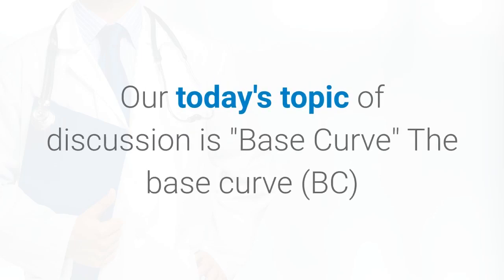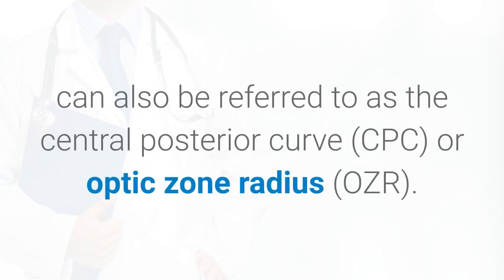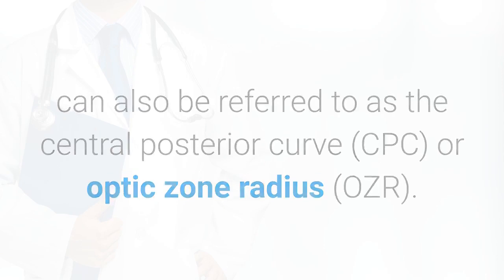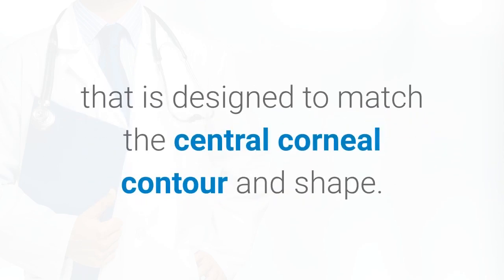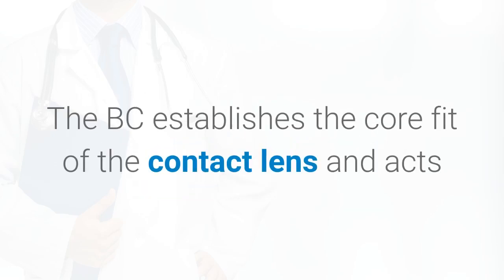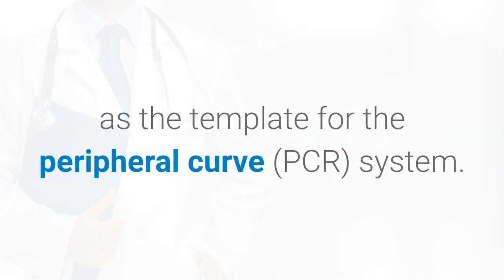Our today's topic of discussion is base curve. The base curve BC can also be referred to as the central posterior curve CPC or optic zone radius OZR. The BC is the primary curve of the contact lens that is designed to match the central corneal contour and shape. The BC establishes the core fit of the contact lens and acts as the template for the peripheral curve PCR system.